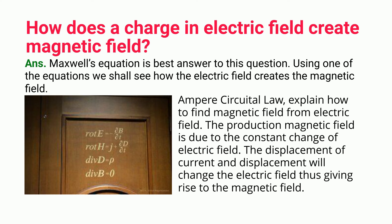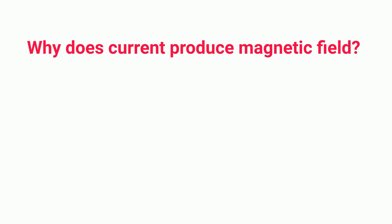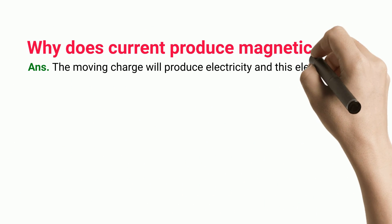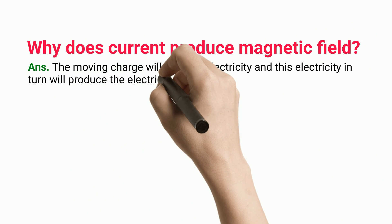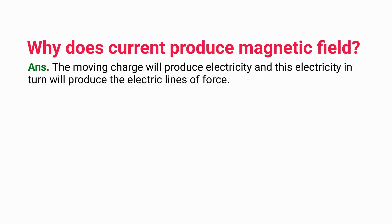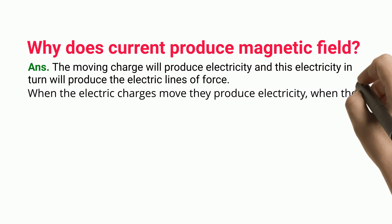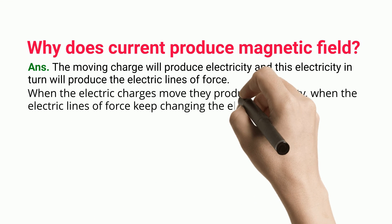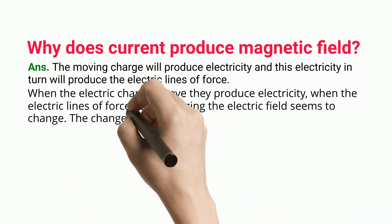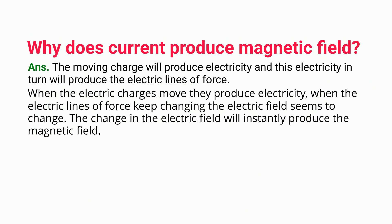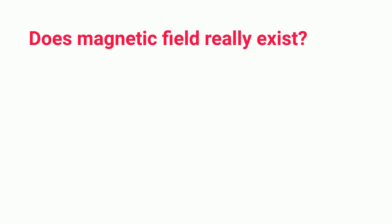Why does current produce a magnetic field? The moving charge produces electricity, and this electricity in turn produces electric lines of force. When the electric charges move, they produce electricity. When the electric lines of force keep changing, the electric field changes, and this change in the electric field will instantly produce the magnetic field.